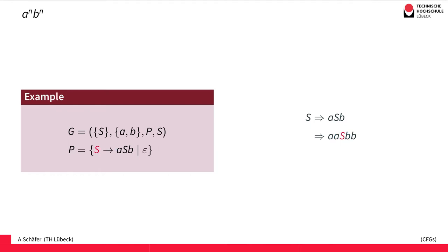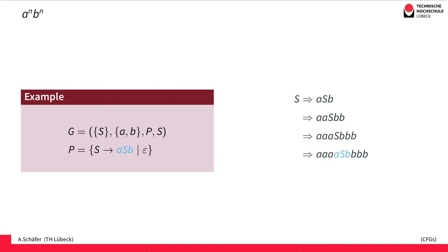And we continue. Again we have to replace the S on the right-hand side and we choose the rule replacing it by another instance of ASB. So we replace by ASB again. Then we have to apply the rule for S again and construct more A's and B's. The important part here is that using this construction we always construct the same amount of A's and B's using one production — there's only one production, this one that replaces S by ASB.